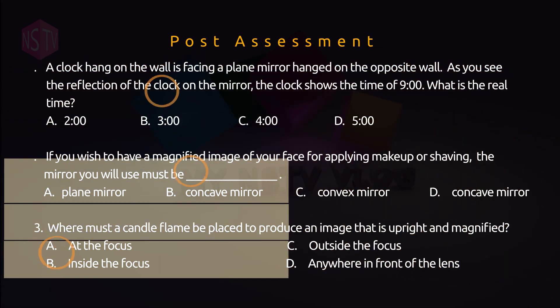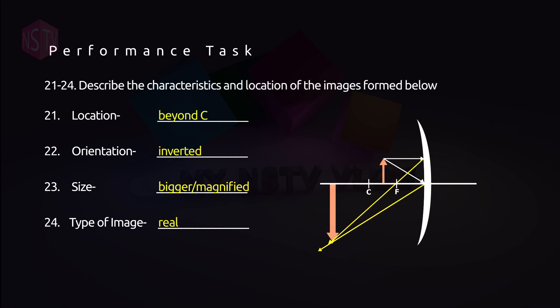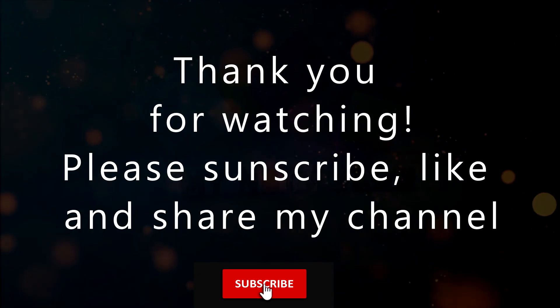For the last number, please refer to performance tasks numbers 21 to 24. Can you look at the given figure? Describe the location, orientation, size, and type of image formed. The answer to the following: location is beyond the center of curvature, orientation is inverted, the size is bigger or magnified, and the type of image is real. So a big thumbs up my dear students. Thank you.